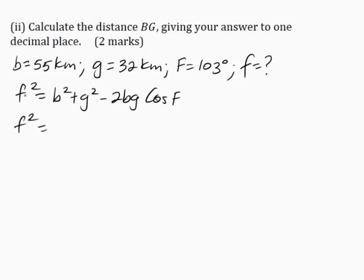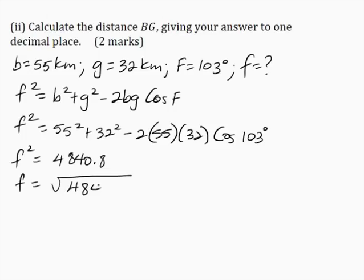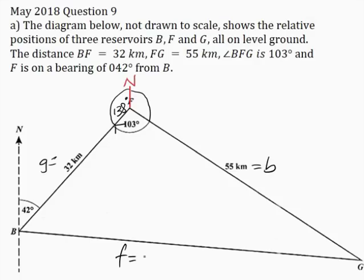Substituting the values of B, G, and angle F, we have 55 squared plus 32 squared minus 2 multiplied by 55 multiplied by 32, cos 103 degrees. F squared is equal to 4,840.8, so F is the square root of 4,840.8. F is equal to 69.6 kilometers to one decimal place. I'll place on our diagram that F is 69.6 kilometers.